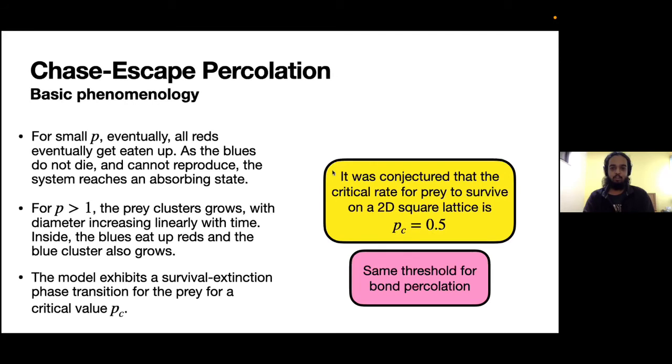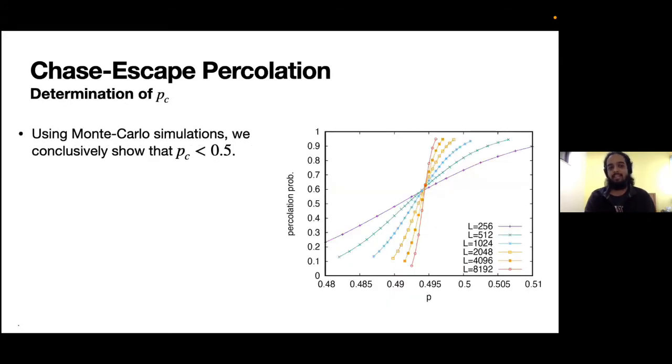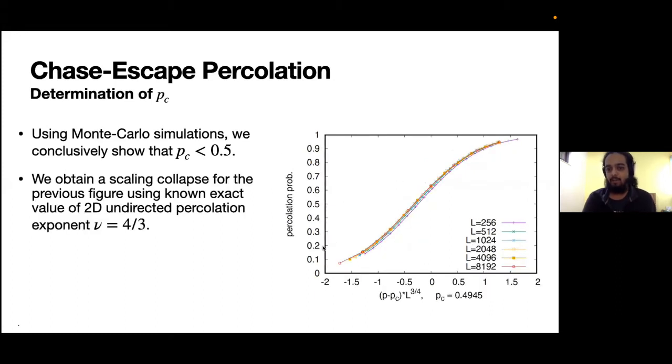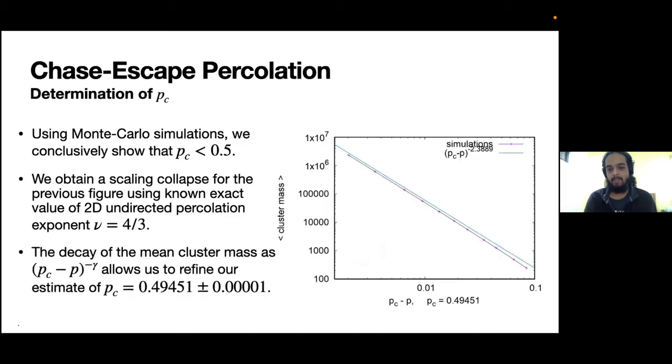We explored further. Our first finding was that through extensive simulations we showed conclusively that pc is actually strictly less than 0.5. In fact, through the scaling collapse with the critical exponent ν equal to 4/3, we were able to estimate pc to be around 0.4945. I would just like to point out that ν equal to 4/3 is actually the critical exponent of 2D undirected percolation.